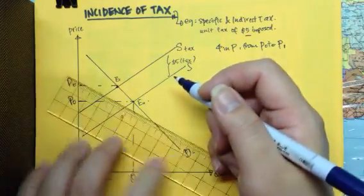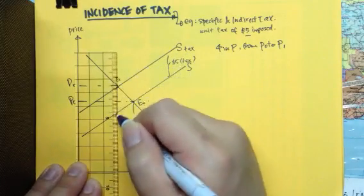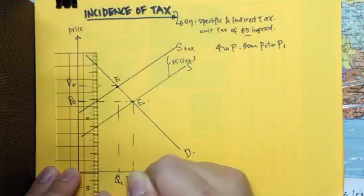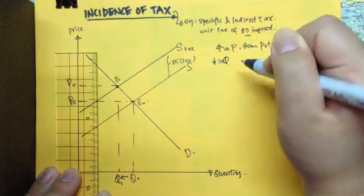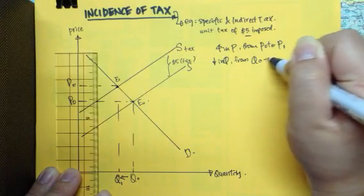And what will happen to the quantity? Quantity decreases. A decrease in quantity from Q0 to Q1.